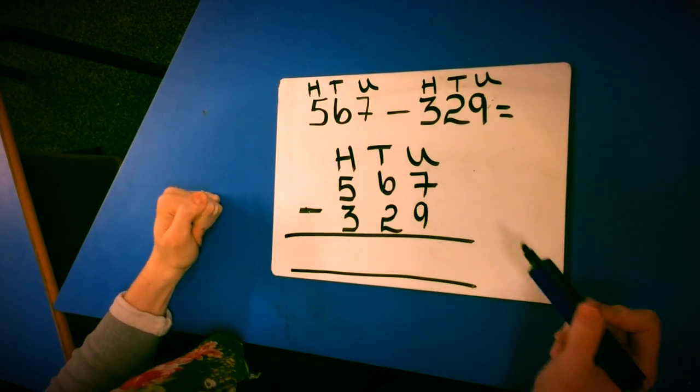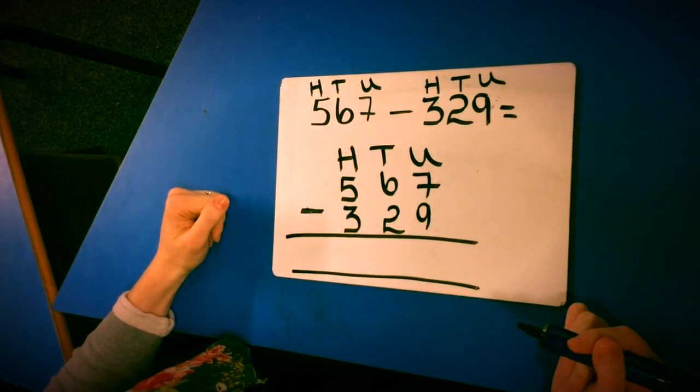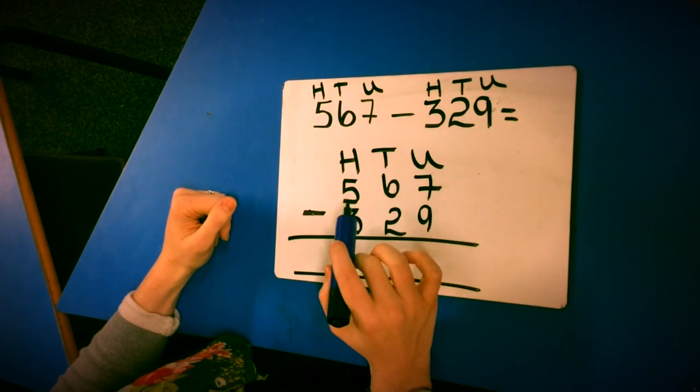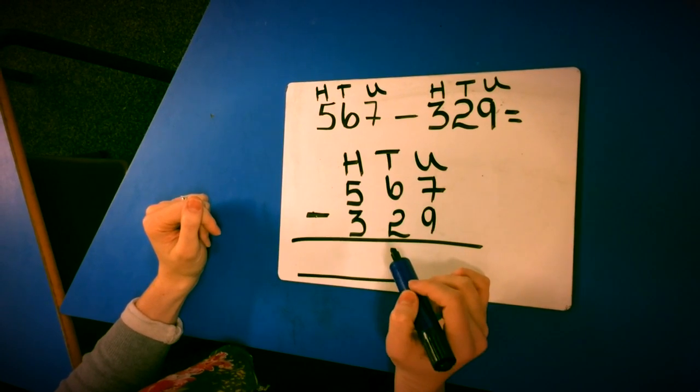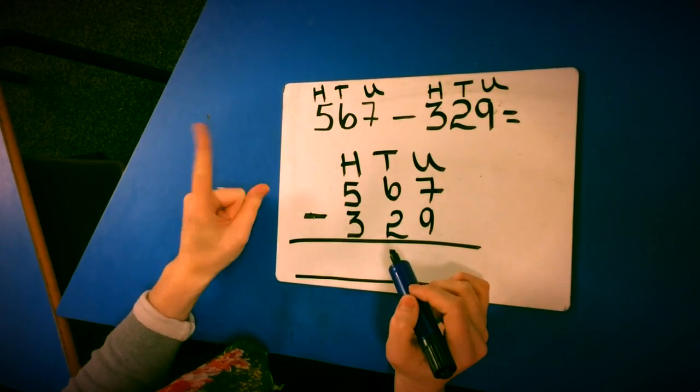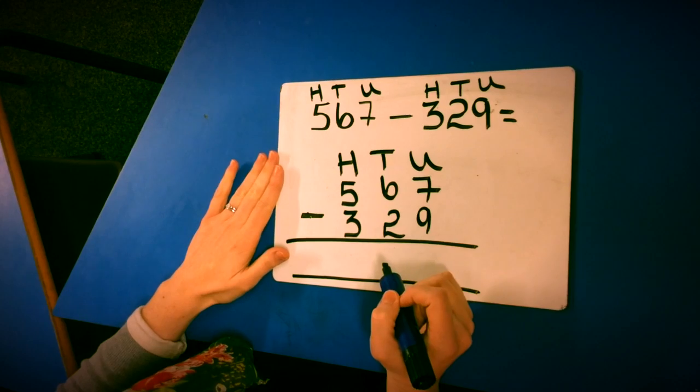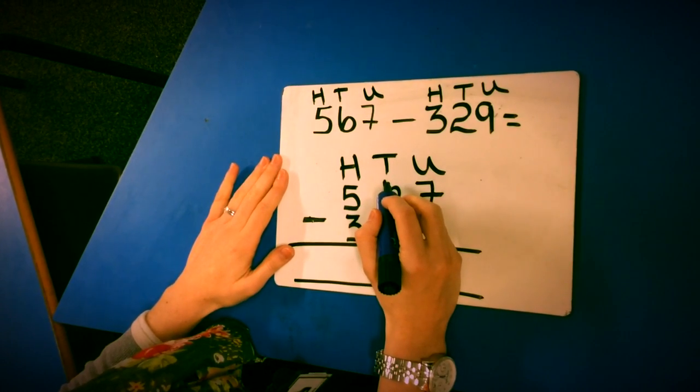So 7 take away 9, you can't do that. So we have to go next door to the tens column. There are 6 lots of tens in this column. And what we're going to do is we're going to take 1 lot of 10. If we take 1 lot of 10, what would it become?